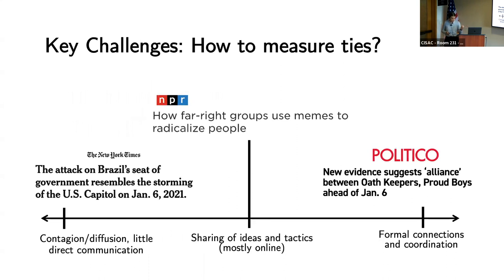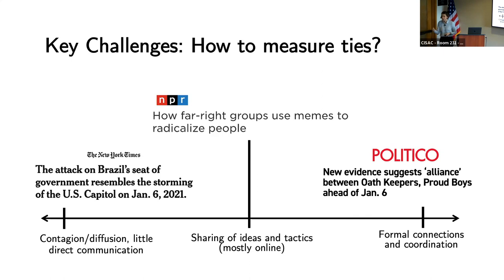Another challenge is what we actually want to study — what do we mean by measuring ties? For a long time, the Mapping Militants Project measured formal connections between entities by which we meant group-to-group interactions involving sharing of materials, intelligence, or ideological beliefs. But when we think about the far right, we're now thinking about a spectrum of different relationships. This spectrum is punctuated by a few different questions: what is the motive behind the tie? Is it ideological or doctrinal?